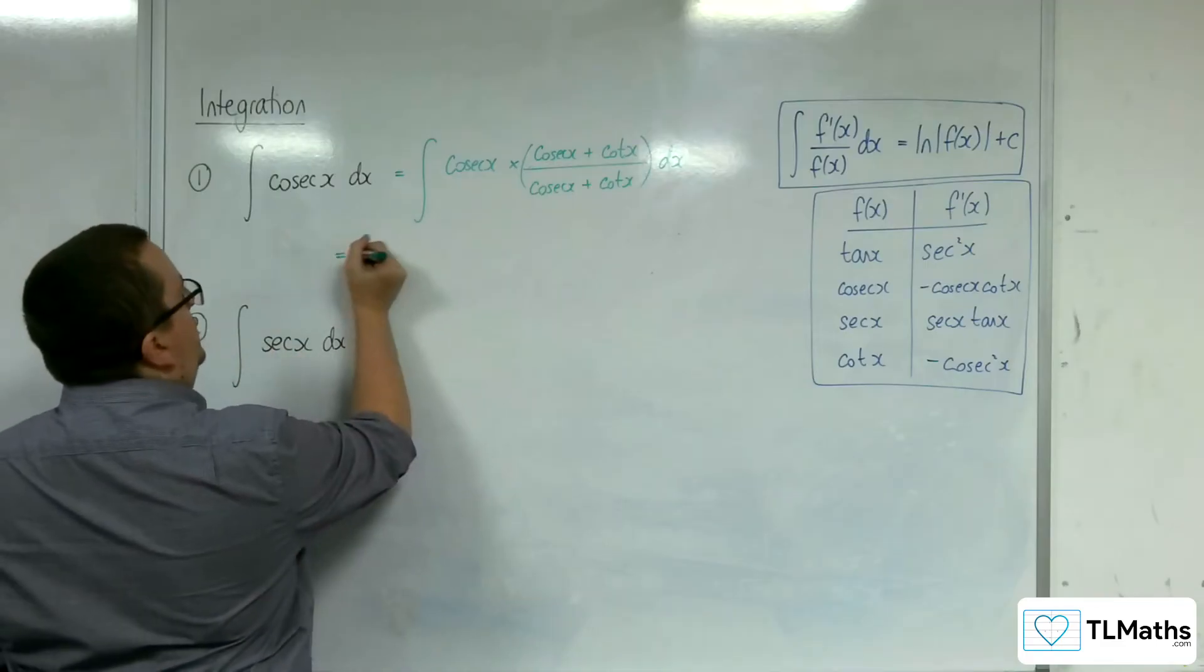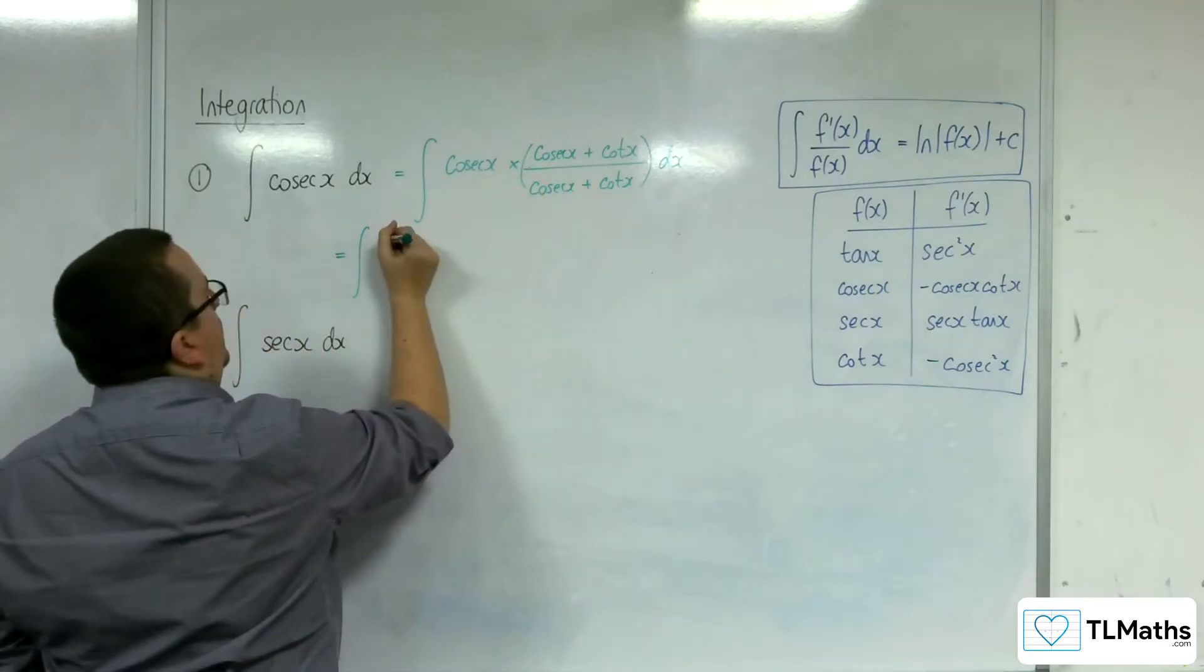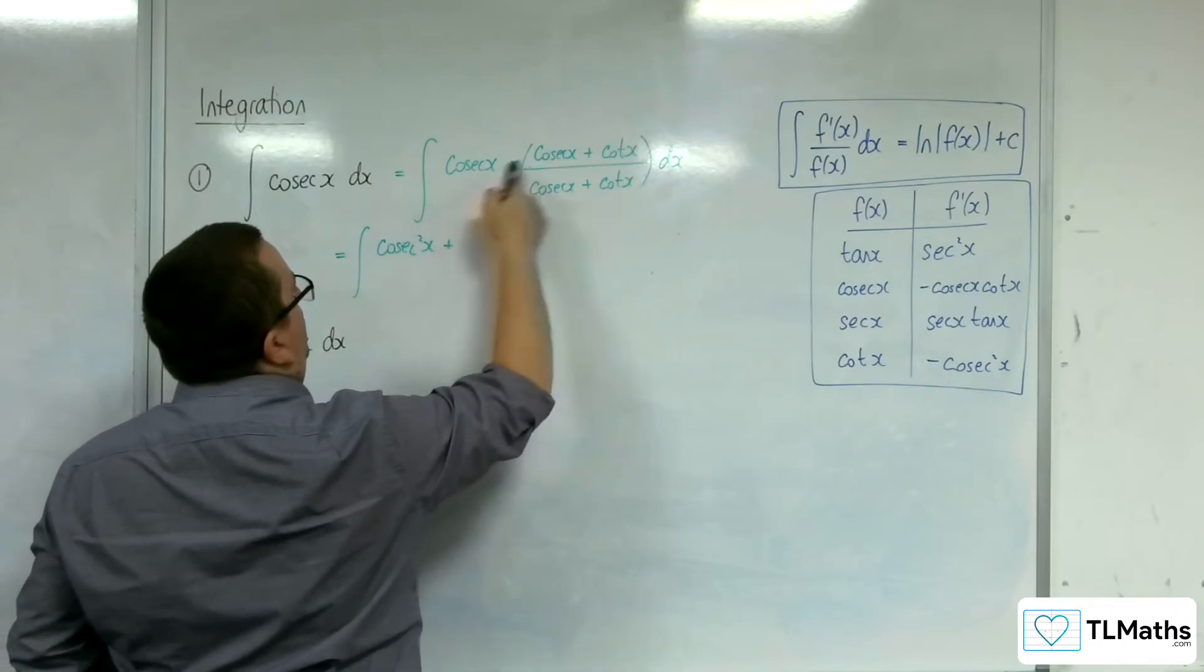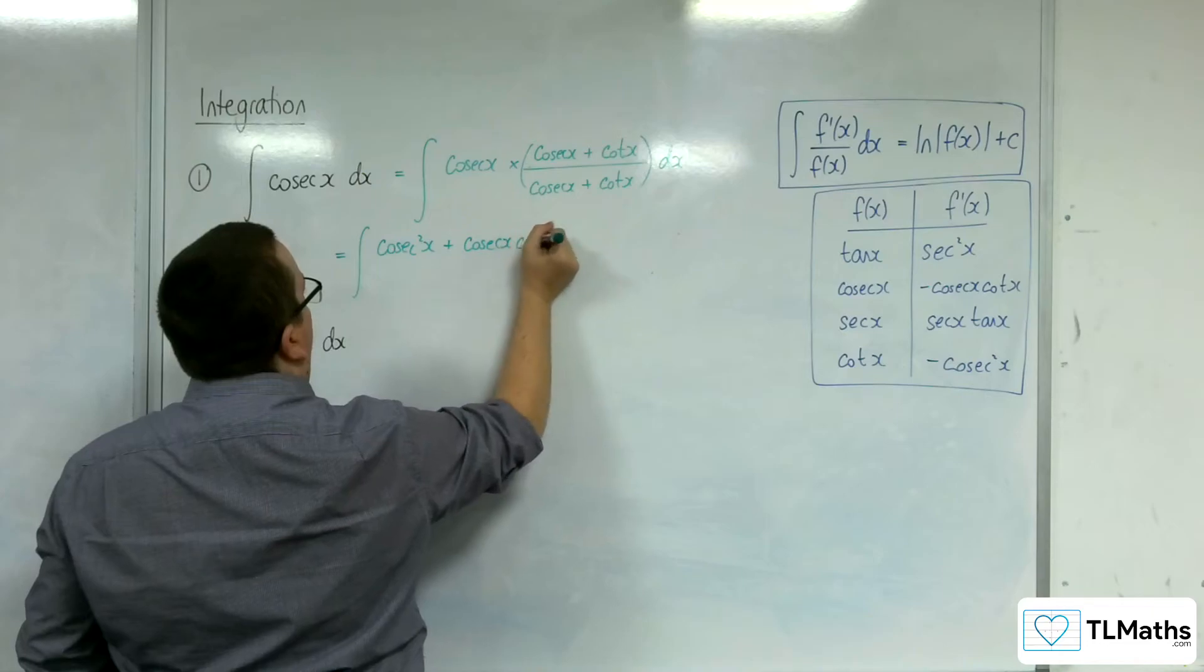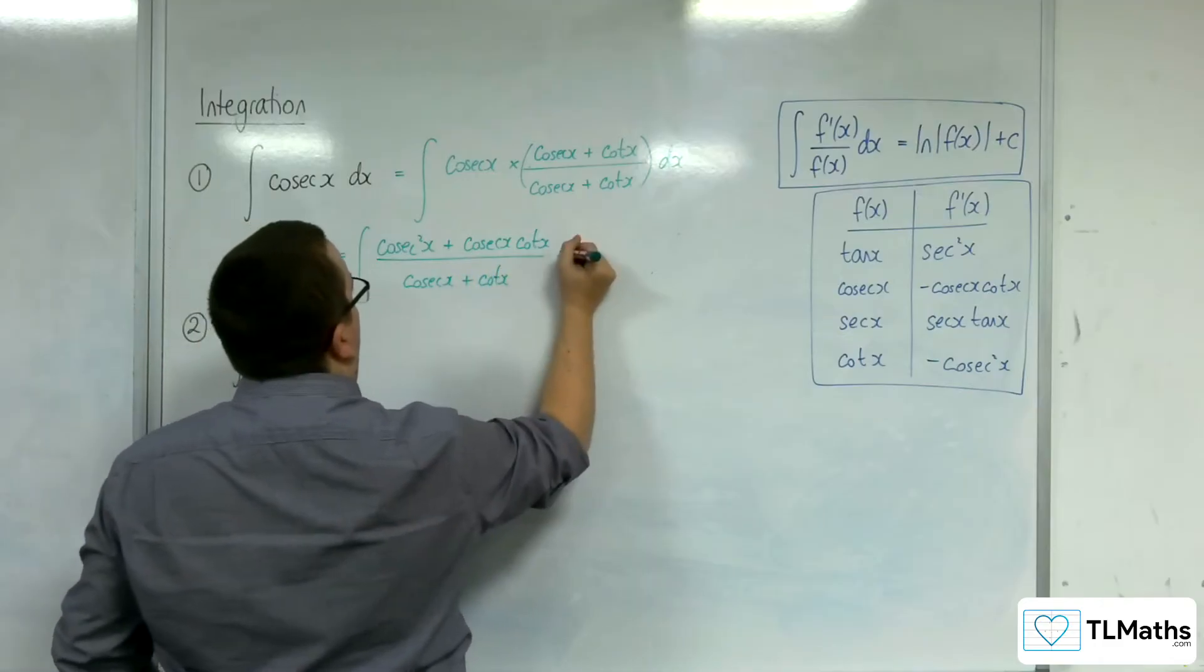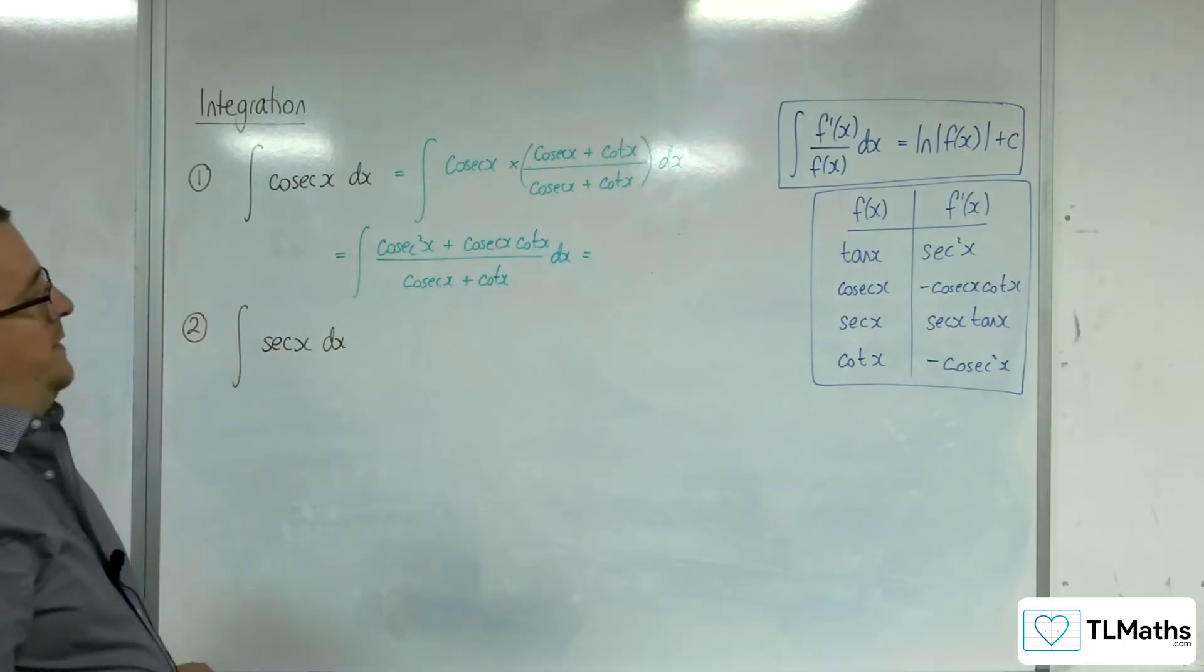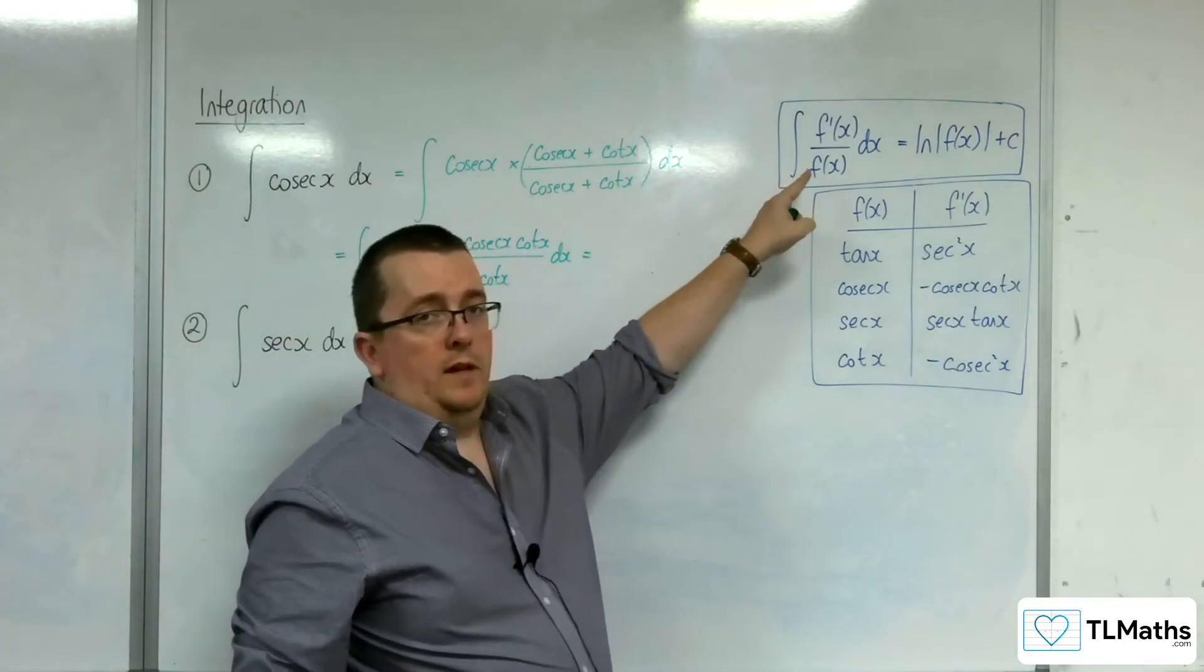So we're going to multiply this top and bottom by cosec x plus cot x. What happens when you do that is you're going to get cosec times cosec, so cosec squared x, and you're going to get cosec times cot over cosec plus cot.